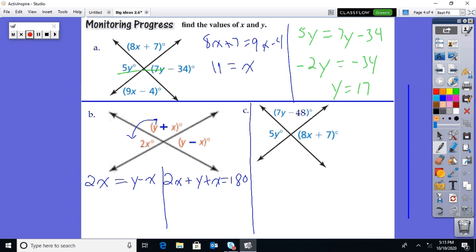So now I look, which of these would be easiest to get by itself? I try to isolate one of these variables. Y looks pretty easy to get by itself. If I just add x to both sides, then I know that 3x equals y. So now I have y by itself. So now I can plug it in over here where I have this y. So 2x plus 3x plus x is 180. 2, 3, 6x is 180, so x is 30.